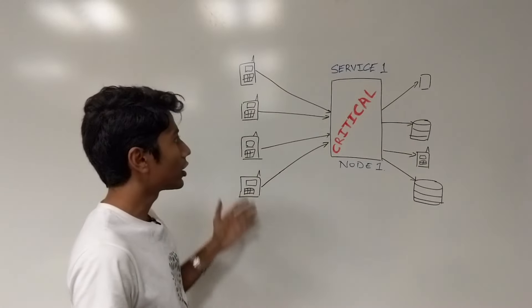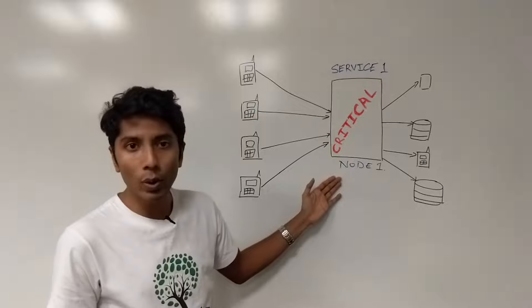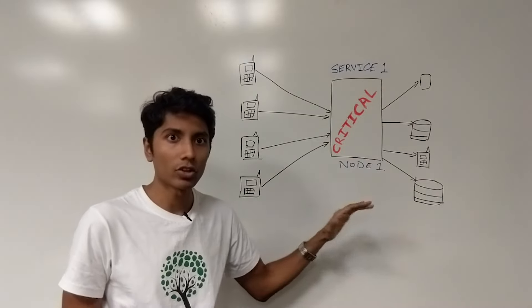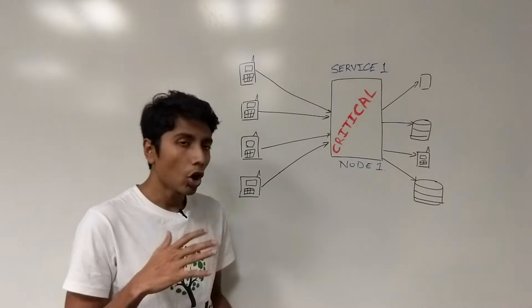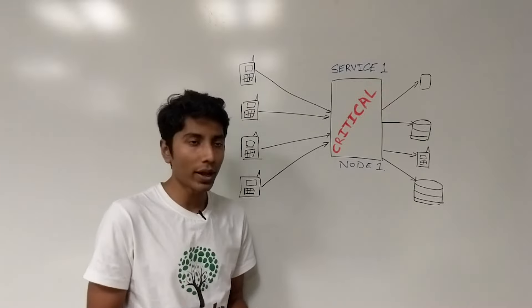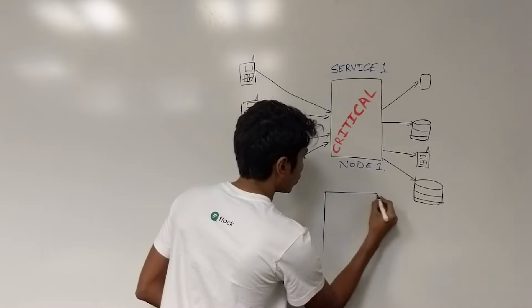Which means that you have multiple components connected to one point. And if this point crashes, then your system crashes. The obvious and easiest way to mitigate this is to add another node.